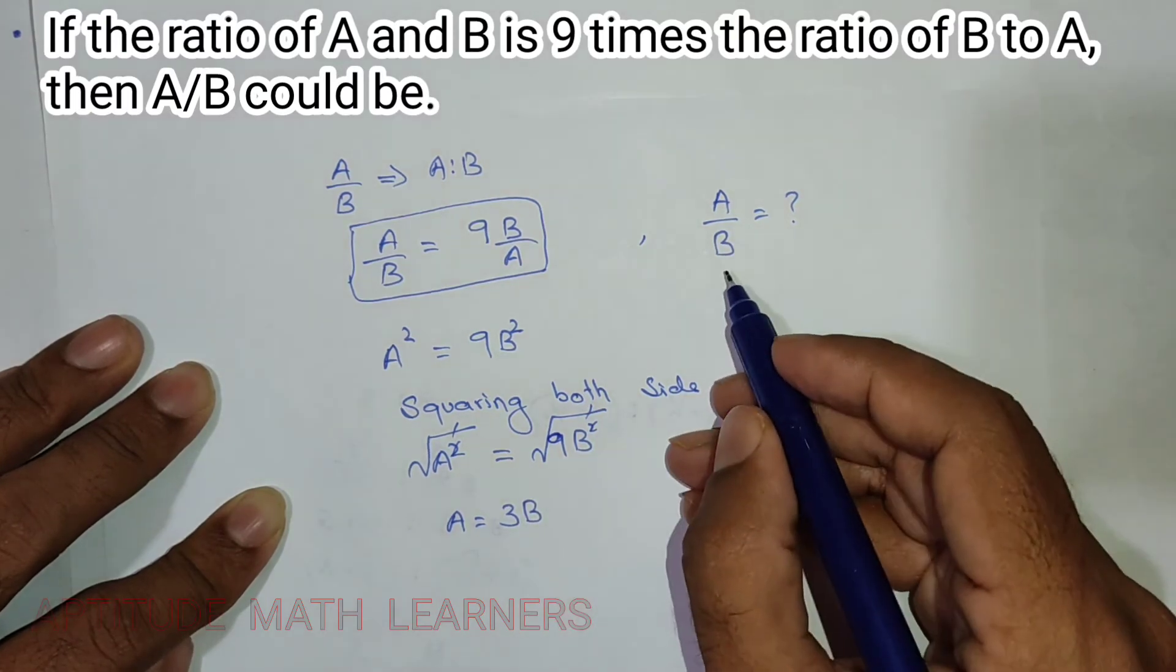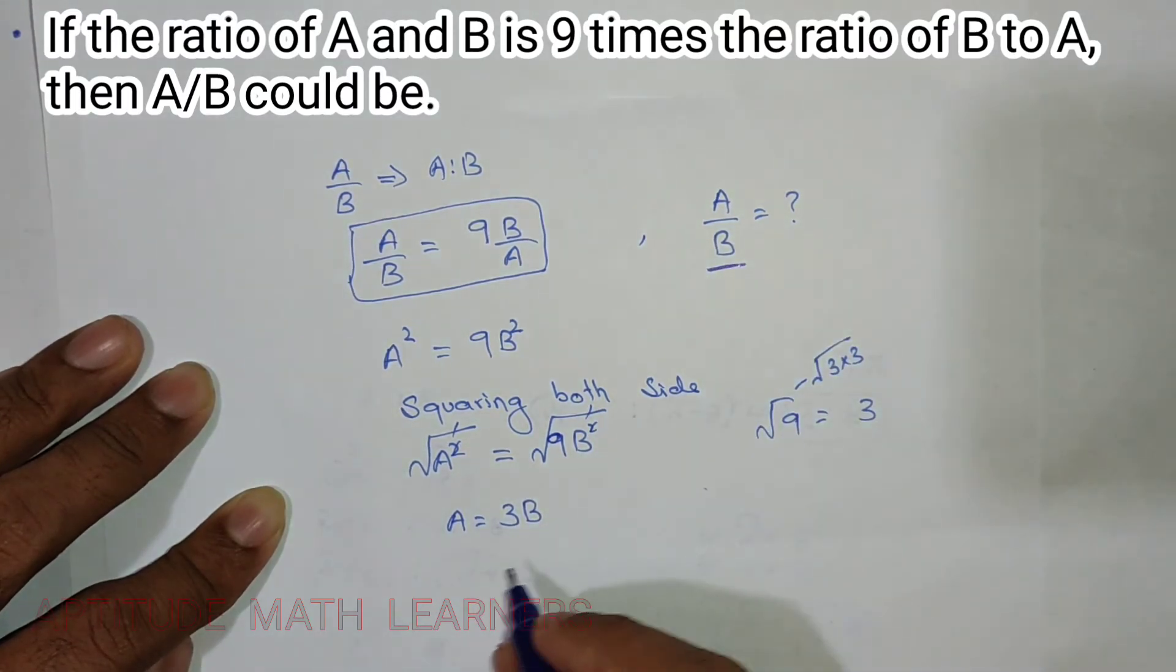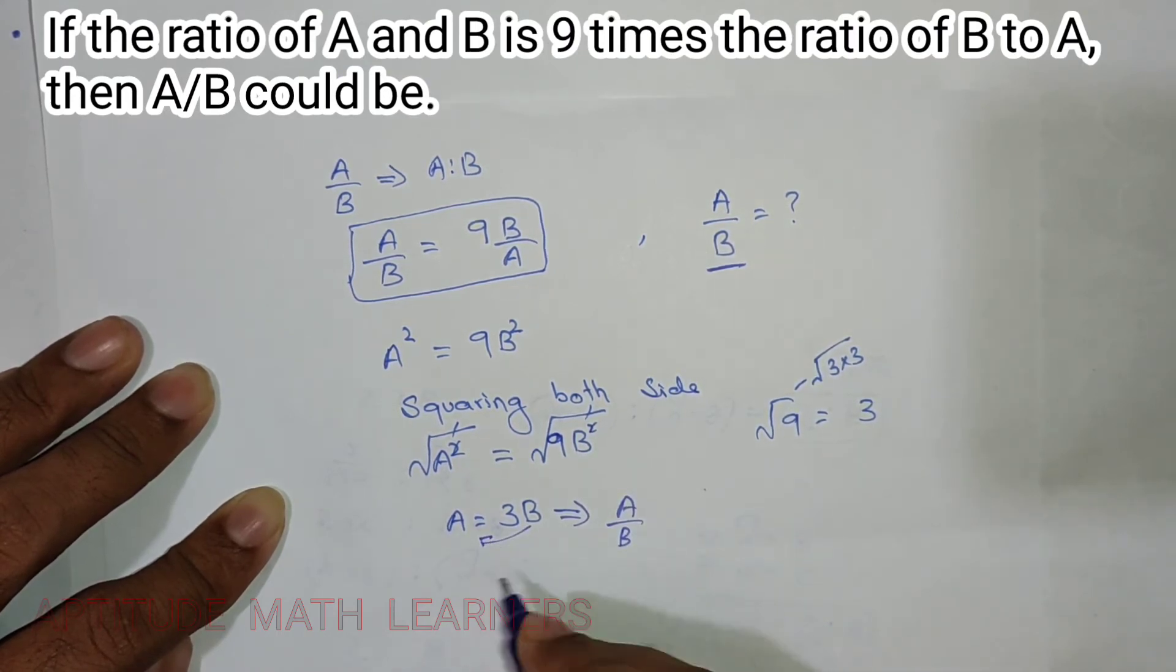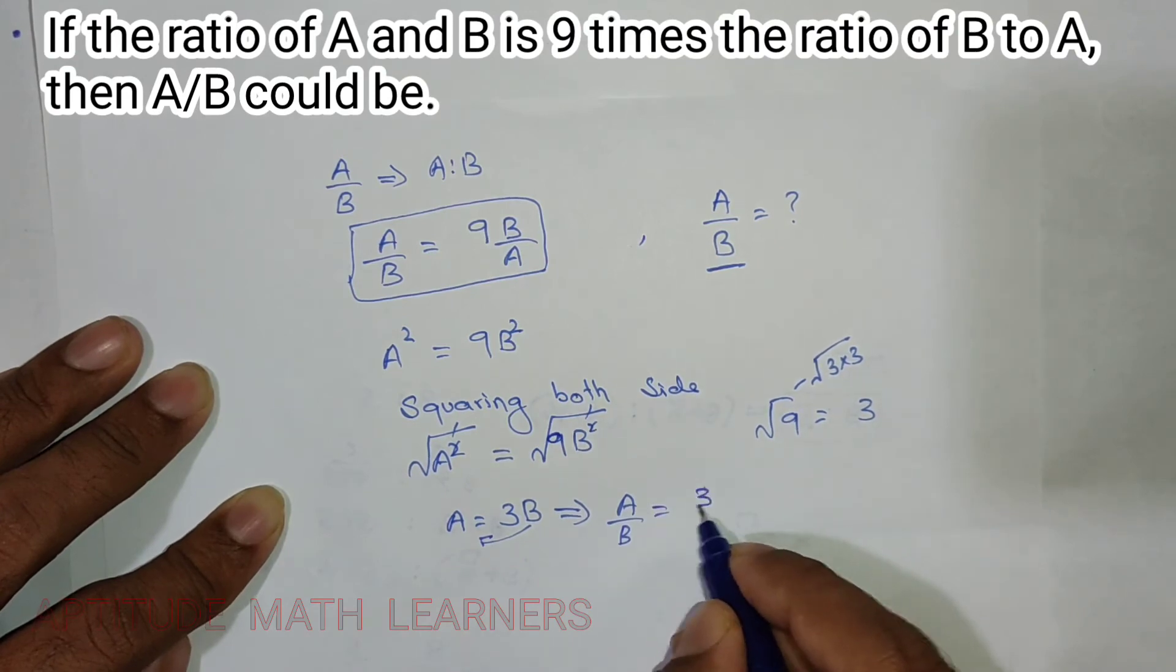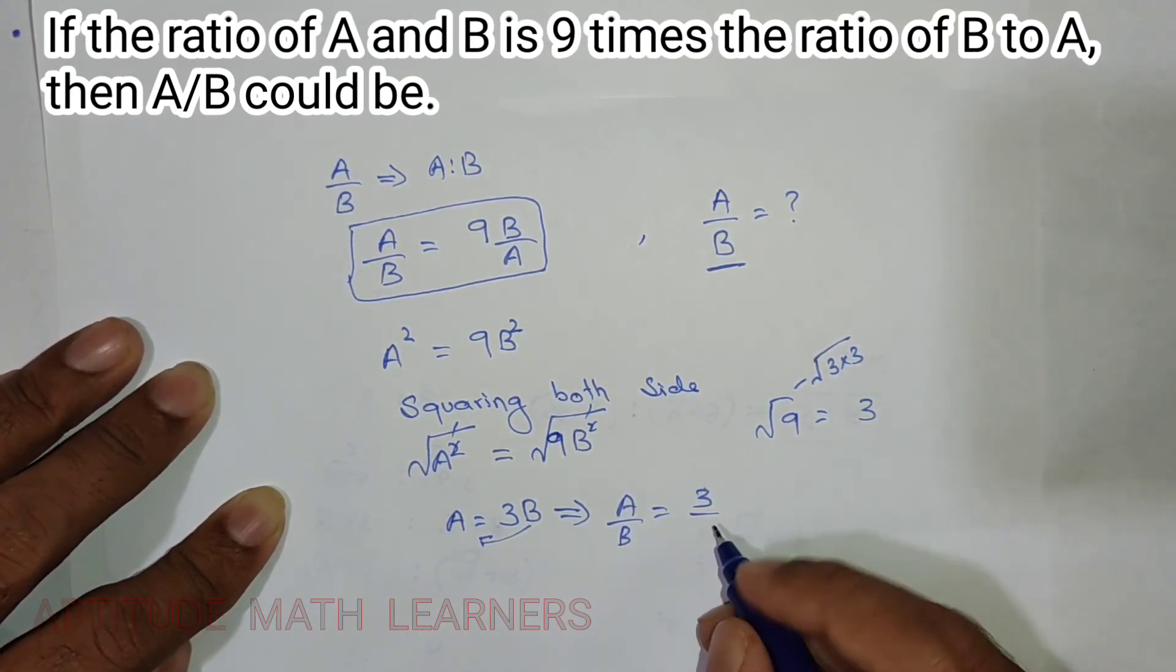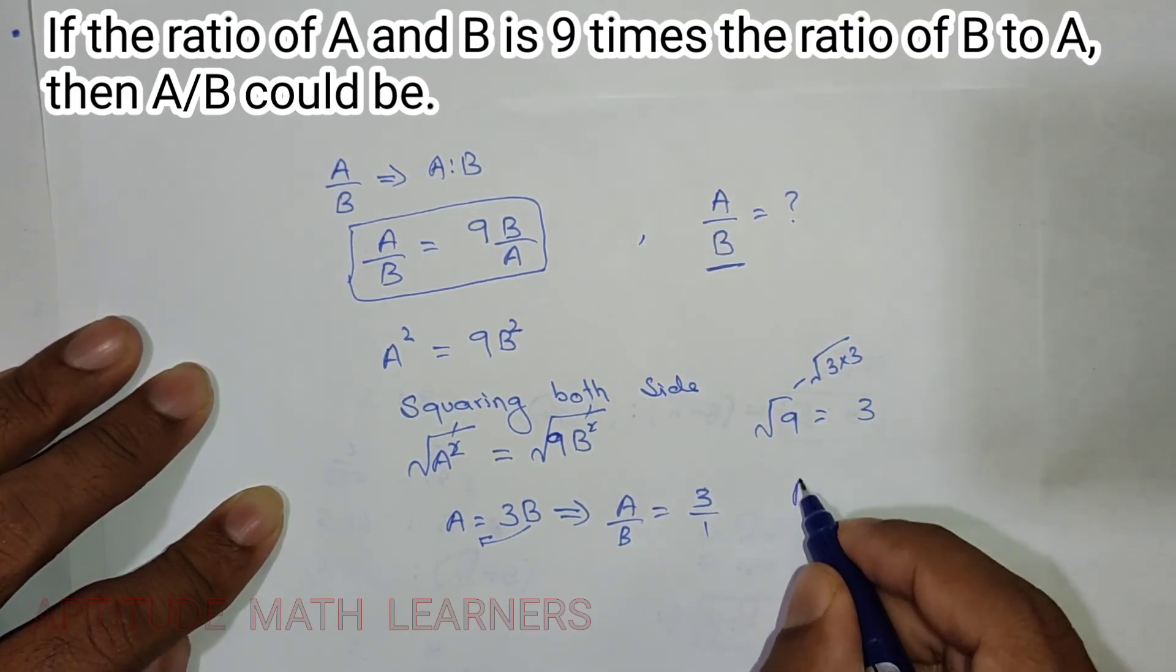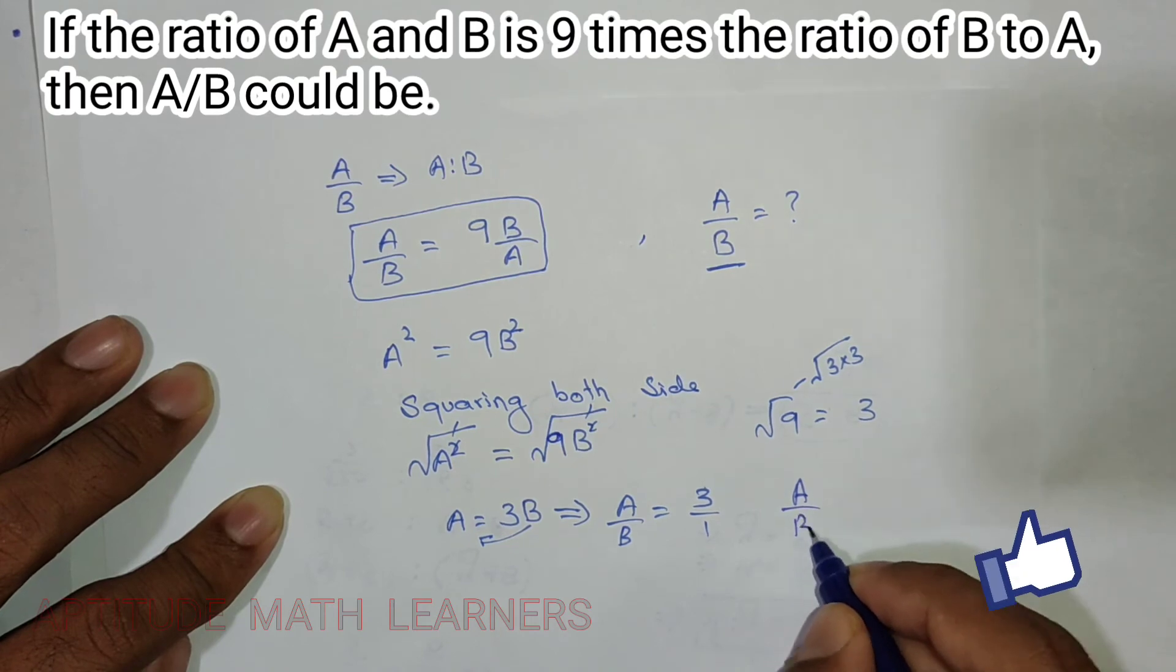We just have to find A upon B. So here we get A upon B - this B goes downward - is equal to 3. So A upon B is equal to 3 upon 1.